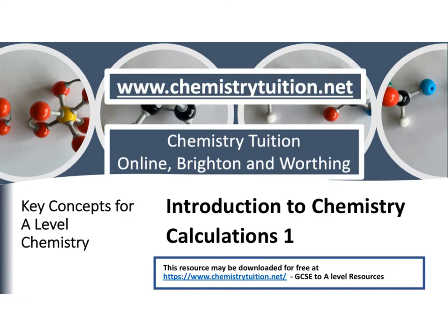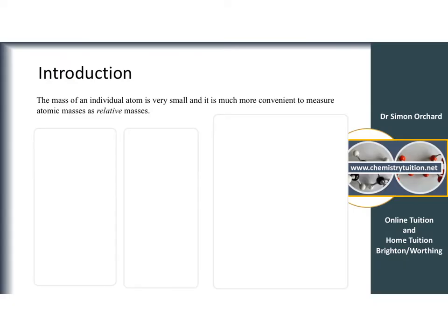In this video we're going to begin thinking about how chemists deal with atoms being so small when they come to do chemical reactions. The only way that we can have reasonable numbers when we're dealing with atoms and trying to work out how much of each reactant we need is to use a relative scale.